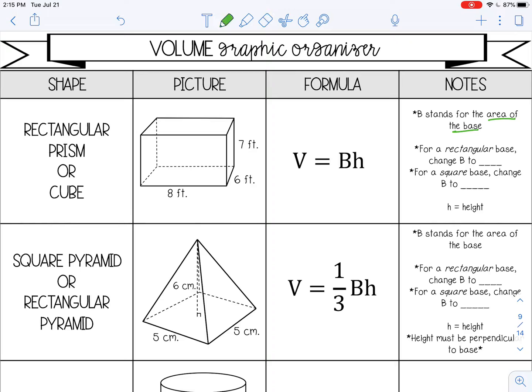And if you look over here at the notes, if you are given this formula, if you have a rectangular base, you're going to change the B to length times width. And then if you have a square base, you can change the B to length times length, because in a square there will be the same sides. And then of course, h is the height.